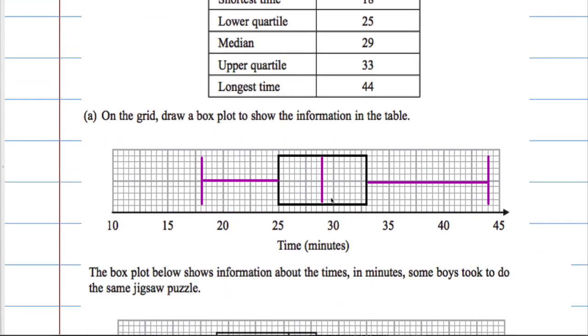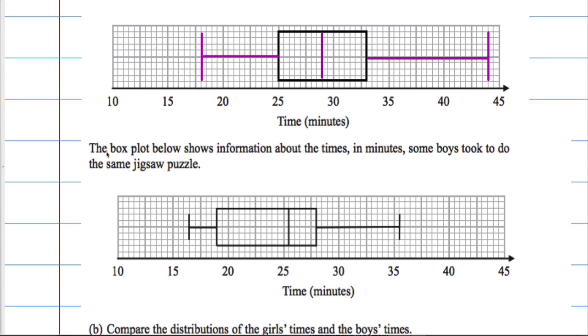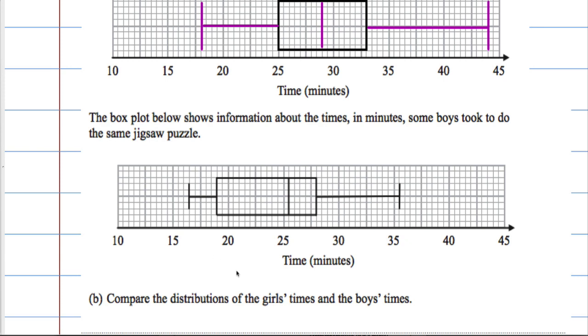And that's the job done. So that's our boxplot. Okay, let's see what we're asked to do next. The boxplot below shows information about times in minutes some boys took to do the same jigsaw puzzle. So we have another boxplot. And we're asked to compare the distributions of the girls' times and the boys' times.